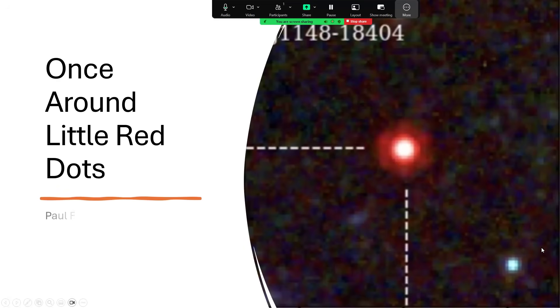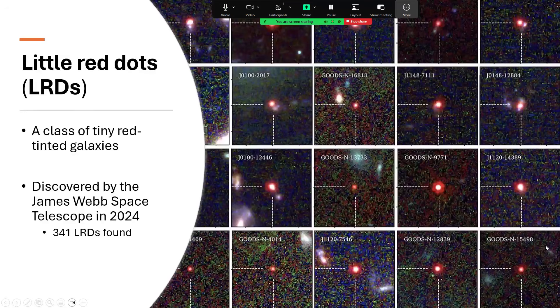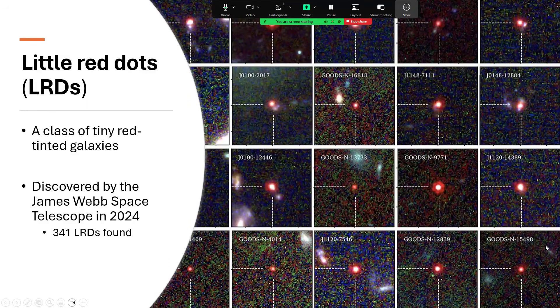Once around, little red dots. Now what's this all about? These little red dots are a class of tiny red-colored galaxies that were discovered by the James Webb Space Telescope, and 341 of them are catalogued in a survey in 2024. There's an illustration of a few of them, and they do indeed just look like little red dots in the image to the right there.